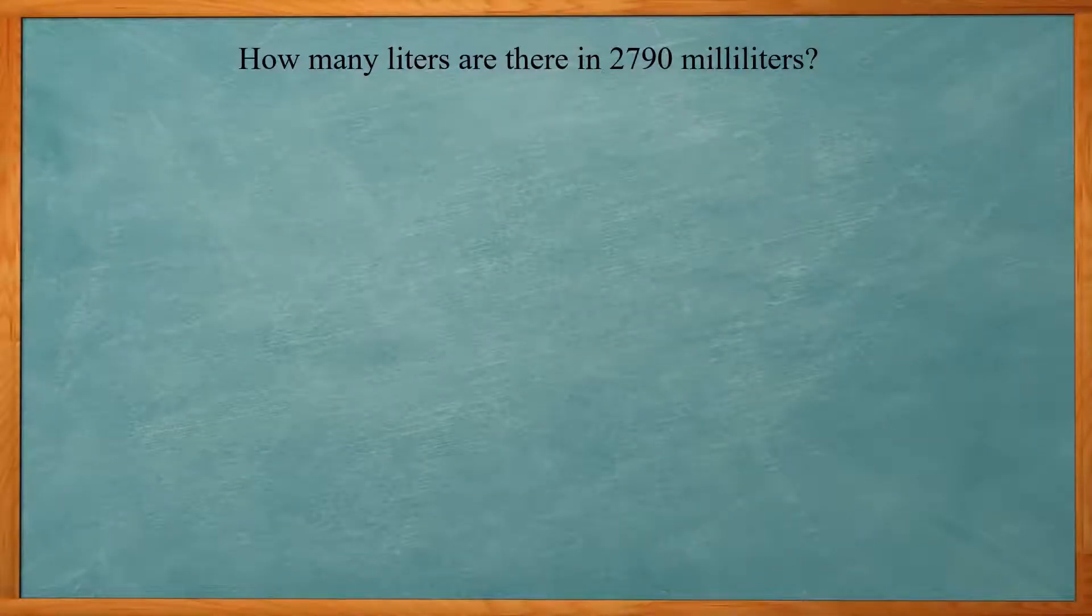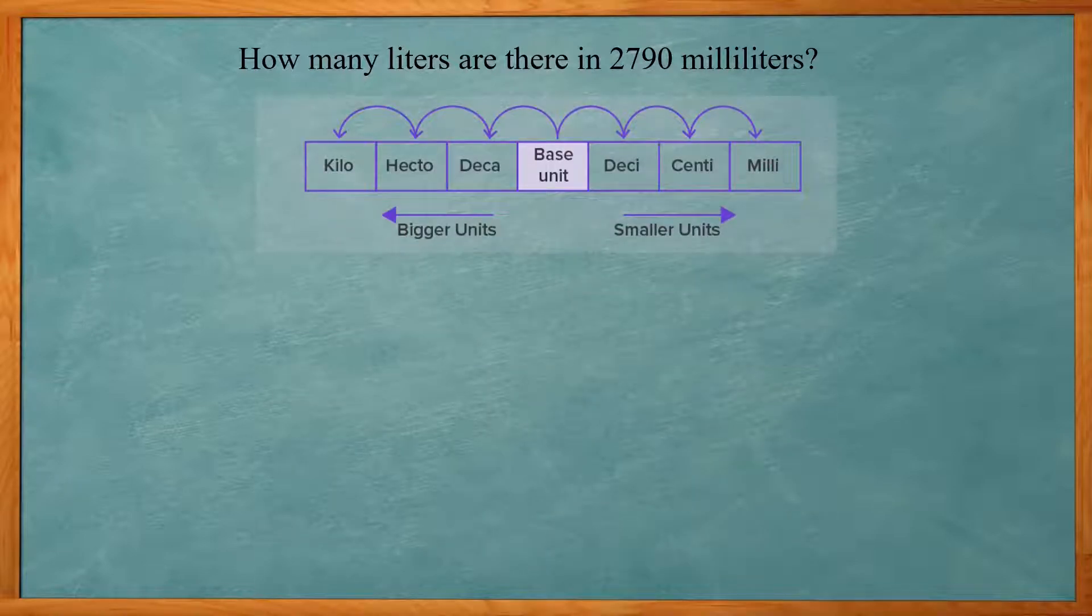So this first one says, how many liters are there in 2,790 milliliters? Basically we're changing it from milliliters to liters. So we look at the metric system, we've got our base unit that can be liters, grams, anything like that. It's our base unit.